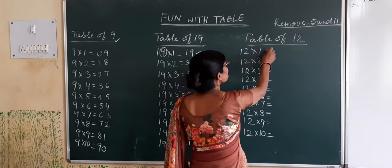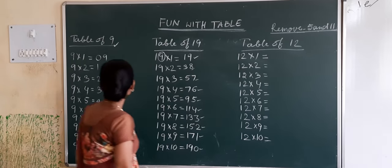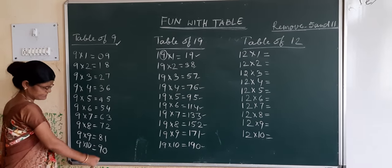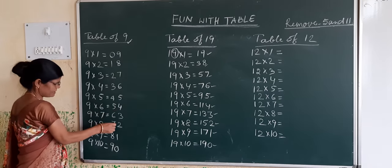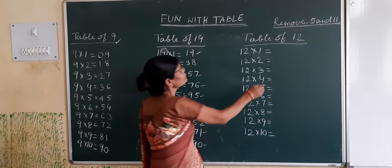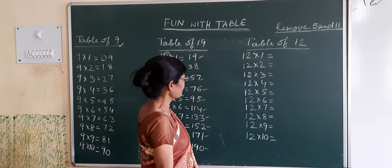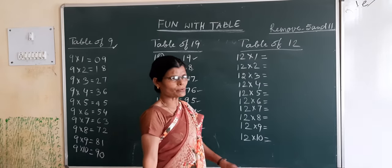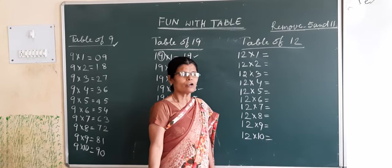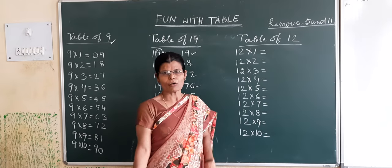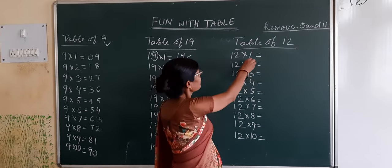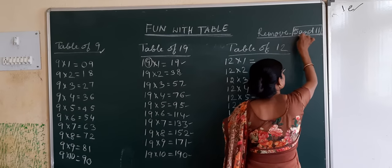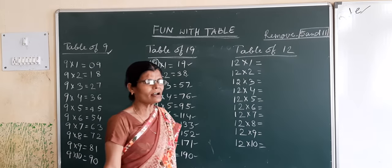Now see table of 12. Here in table of 9, we have written 0 to 9. This is 10 digits. Here also we have to write 10 numbers. But in the table of 12, there are 12 numbers, 1 to 12. That's why we should remove 2 numbers to follow the rule of the table. We will remove the numbers 5 and 11. We will write sequentially.